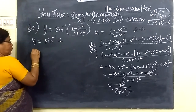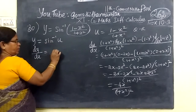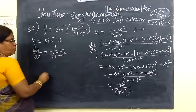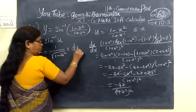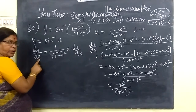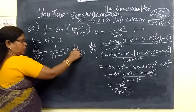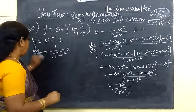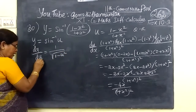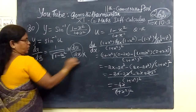So dy by dx is equal to sine inverse, and u is defined. Using the chain rule, dy by dx equals dy by du into du by dx. Here dy by du is 1 by root of 1 minus u squared.